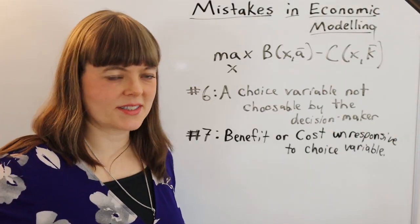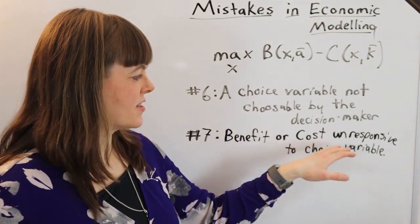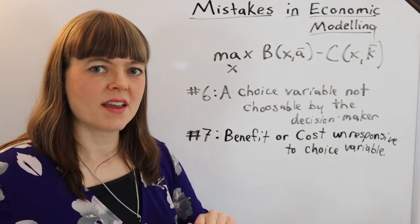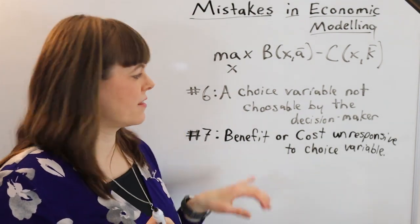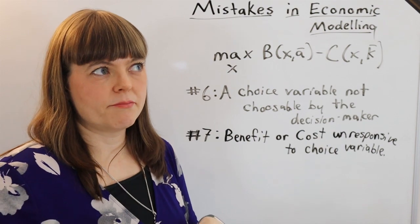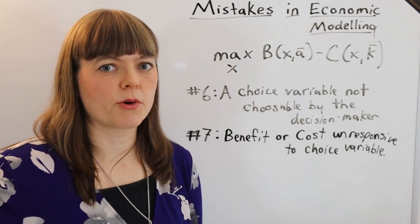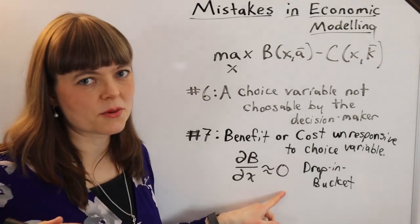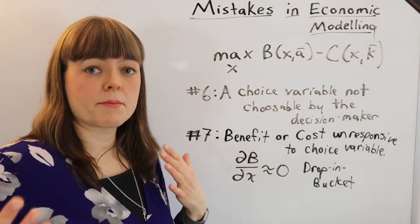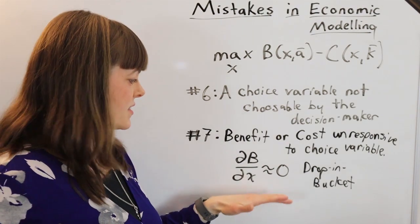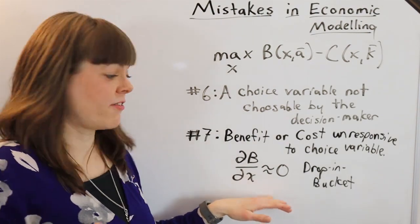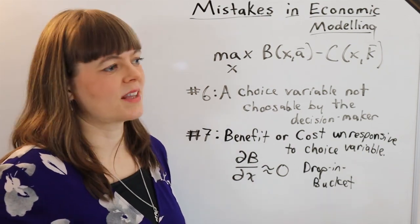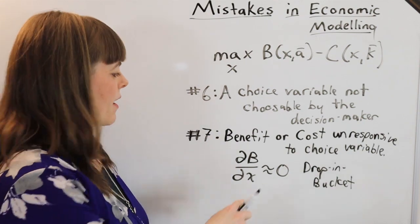And then the seventh mistake that students make is they'll have a benefit or cost that's fairly unresponsive to the choice variable. Now this is different perhaps than the benefit or cost being an actual exogenous variable. It's really where the derivative is about equal to zero, which is associated with drop in the bucket problems. So this isn't necessarily wrong. As a matter of fact, it's an important part of modeling when we're modeling collective action problems and public goods problems and whatnot. But sometimes students will have just one benefit and just one cost where the elasticity of benefit with respect to the choice variable is almost zero.